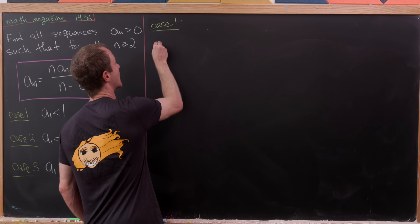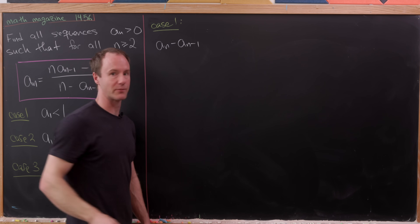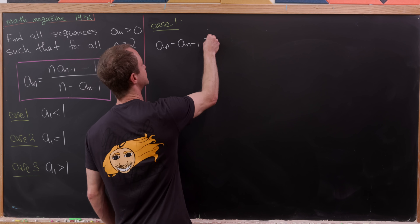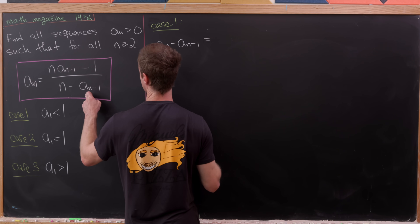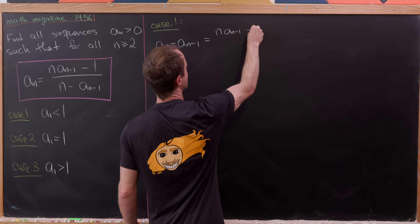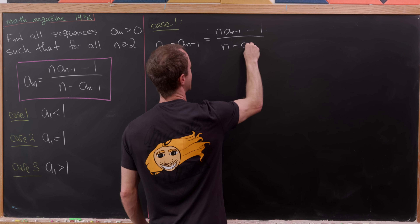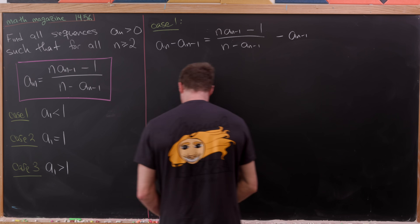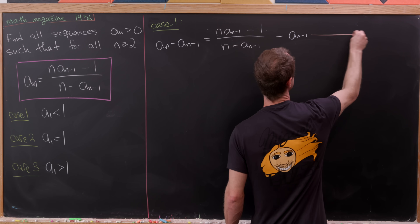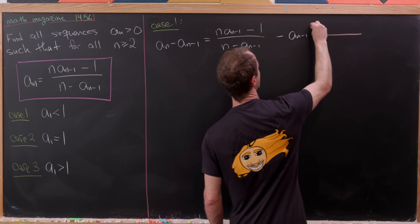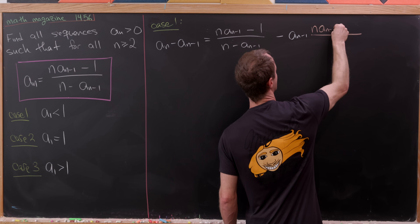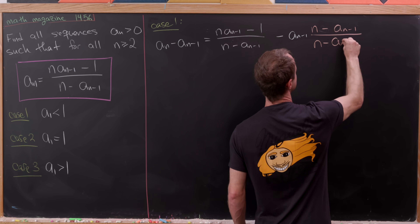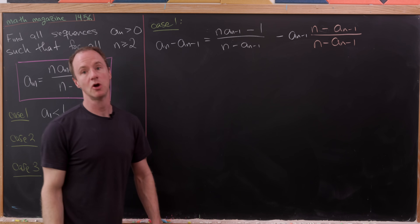Let's look at the difference operator applied to the sequence — that is, aₙ minus aₙ₋₁. Applying the recursion for aₙ gives (n·aₙ₋₁ - 1)/(n - aₙ₋₁), and from that we subtract aₙ₋₁. We build a common denominator of (n - aₙ₋₁) by multiplying the second term by (n - aₙ₋₁) over itself.